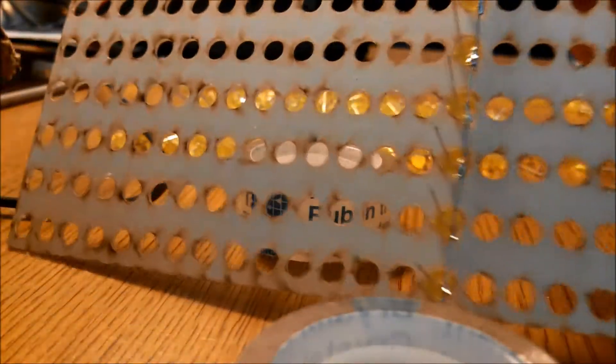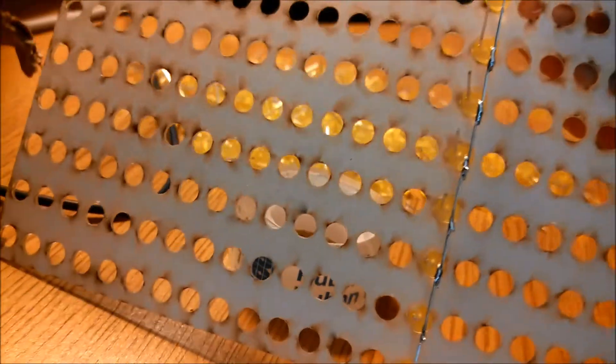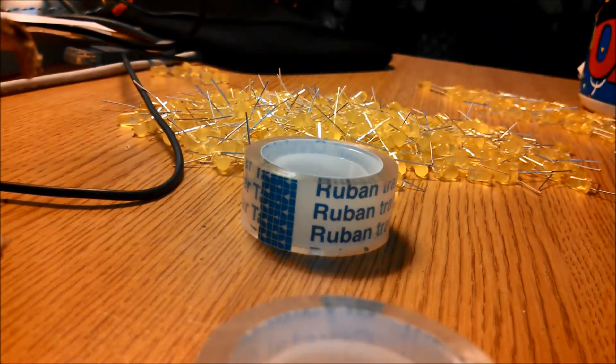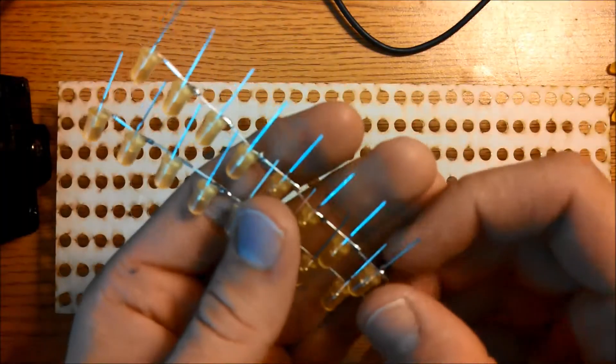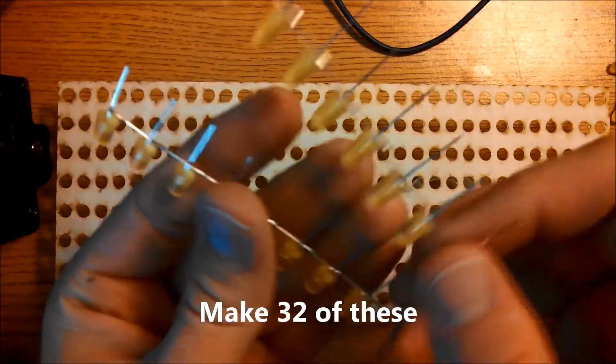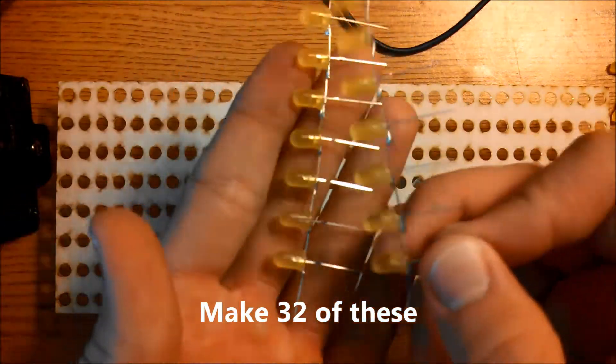Once again, this is what it should look like. Now you're going to have to make 32 of these LED columns.